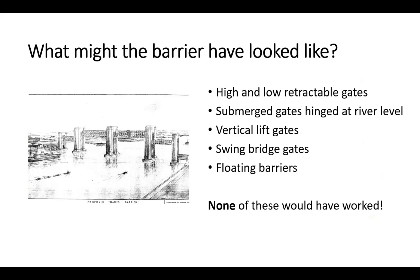They conceded a bit and said perhaps we can come down to 450 feet clear width. When it was decided to put the barrier at Woolwich — because above that point there were both the Surrey and West India docks needing to be serviced — both those docks then closed. In the early 60s it was recognised there was no point in having a clear distance between piers of more than 200 feet, the same as the clear span of Tower Bridge. 41 different schemes were considered.